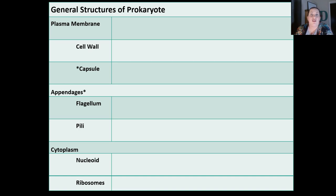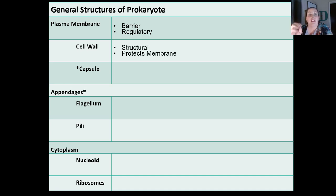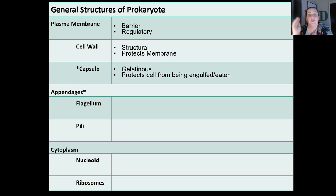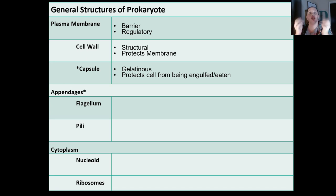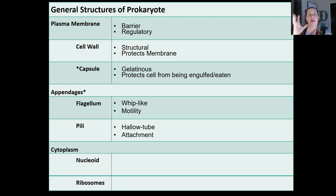Let's look at the general structures of prokaryotic cells. They have the plasma membrane, which acts as a barrier and regulatory structure. They have a cell wall, which is structural and protects the membrane. Some bacteria also have a capsule — a gelatinous structure even further out from the cell wall that protects the cell from being engulfed or eaten by the immune system. Prokaryotic cells can also have appendages like the flagellum, which is a whip-like tail for motility, and pili, which are hollow tubes that look like little hair-like extensions and help with attachment.